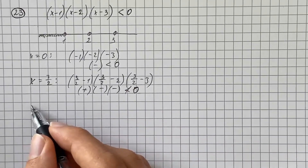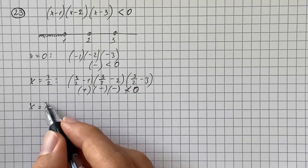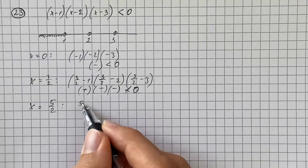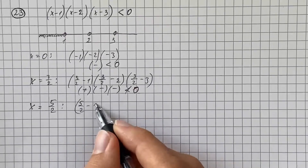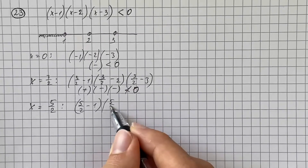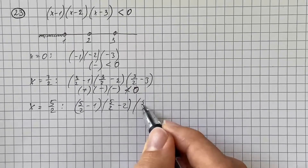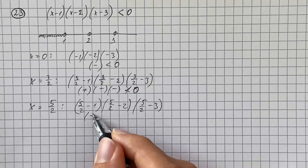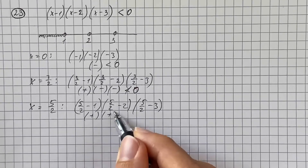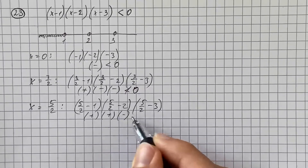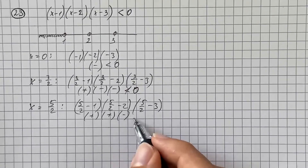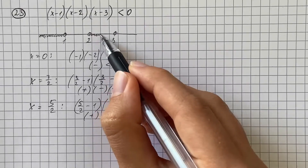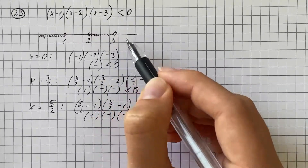The next number is x equals 5 halves. We evaluate (5/2 minus 1) times (5/2 minus 2) times (5/2 minus 3), which is positive times positive times negative — therefore we get a number less than 0. So all numbers from 2 up to 3 will satisfy our inequality.